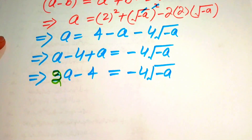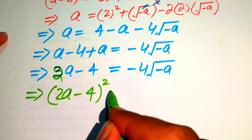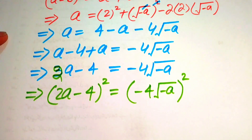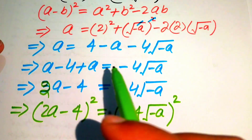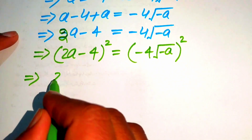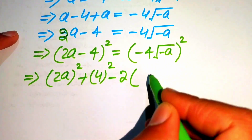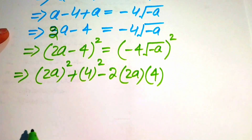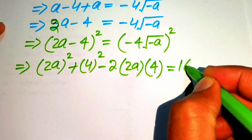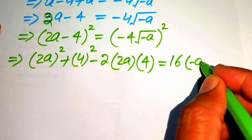In the next step we square both sides again: (2a − 4)² equals (−4√(−a))². Expanding the left side using the square identity gives: (2a)² + 4² − 2·(2a)·4. The right side: (−4)² times (√(−a))² equals 16·(−a), since the square and square root cancel.